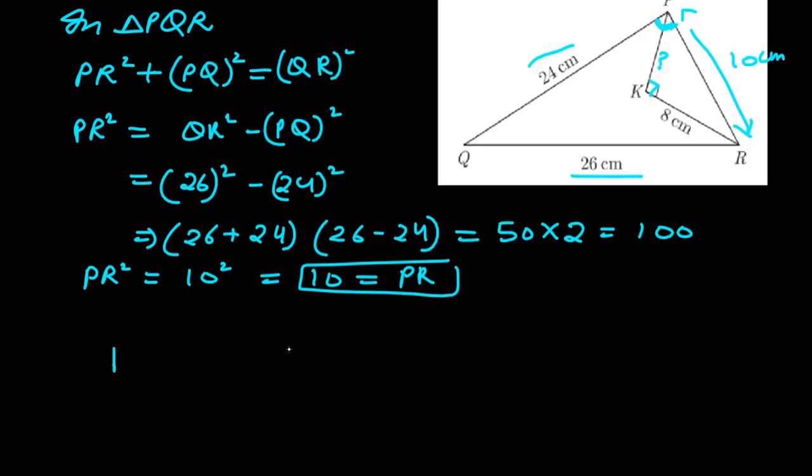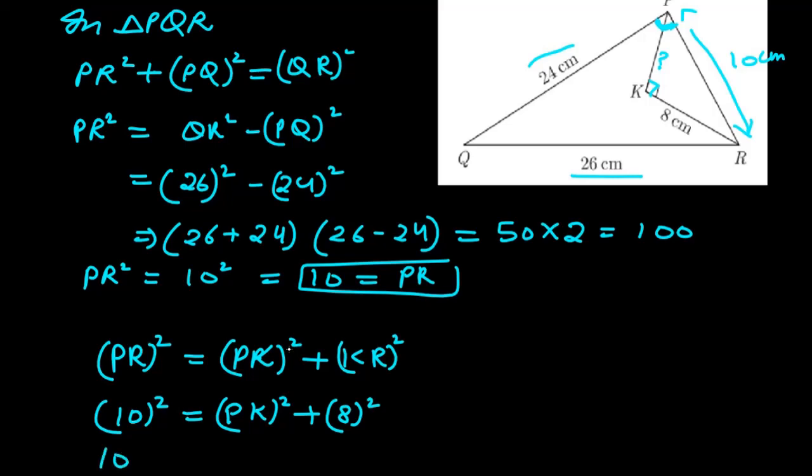You can see that the hypotenuse here is PR equals PK square plus KR square. So we have the value of PR, which is 10. 10 square equals PK, PK is not given to us, that's what we have to find. KR is 8, 8 square. So you get 100 minus 64 equals PK square. So 100 minus 64 you get is 36, and 36 is equal to PK square. So 36 can be written as 6 square equals PK square.